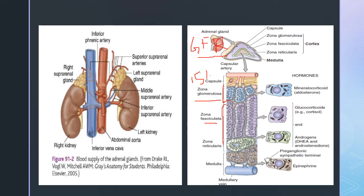It is never G for glomerulocorticoid — glomerulosa secretes mineralocorticoid. Zona fasciculata is the middle and widest zone, constituting about 75% of the adrenal cortex, and secretes cortisol and corticosterone — that is your glucocorticoids. In addition, small amounts of adrenal androgens and estrogens can also be secreted here.